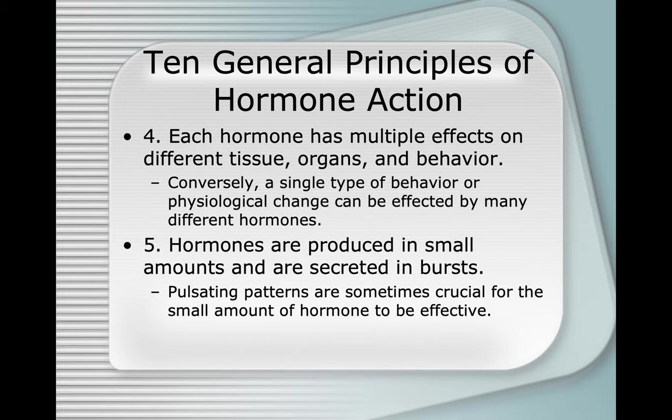Principle four: each hormone has multiple effects on different tissues, organs, and behavior. Conversely, a single type of behavior or physiological change can be affected by many different hormones. Principle five: hormones are produced in small amounts and secreted in bursts. Pulsating patterns are sometimes crucial for the small amount of hormone to be effective.